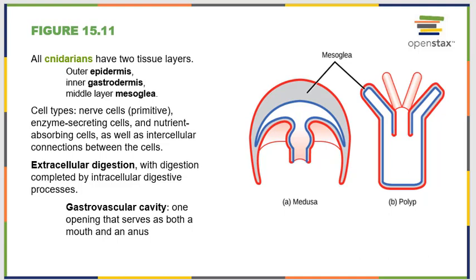All cnidarians have two tissue layers: an outside epidermis and an inside gastrodermis, with the middle layer being the mesoglia. Within that body lining there are a few different types of cells — nerve cells, cells that secrete enzymes for digestion, specialized cells for nutrient absorption, and some intracellular connections. Cnidarians, most commonly known as jellyfish, undergo extracellular digestion. They have a gastrovascular cavity with one opening: you pull food in, digestive enzymes break it down, you absorb the nutrients, and expel the waste out the same opening.